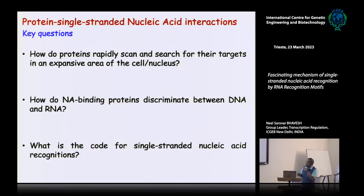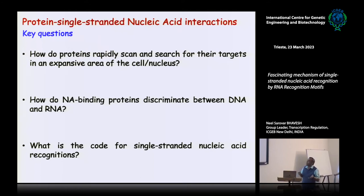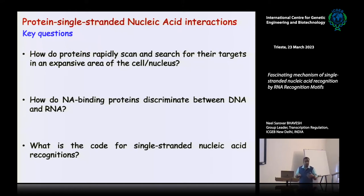We are now trying to address three questions. First, how does the protein rapidly scan and search for the cognate targets inside an expensive area where there are lots of molecules — proteins, nucleic acids inside the cell, or DNA inside the nucleus. How do they do this rapidly? Because this work has to be done very rapidly and specifically. Second, how do RNA binding proteins discriminate, when it comes to single-stranded molecules, between DNA and RNA?